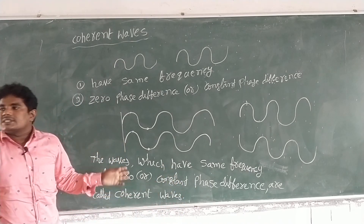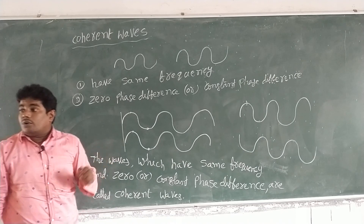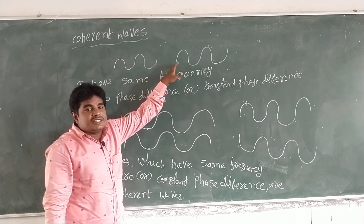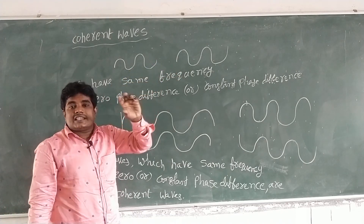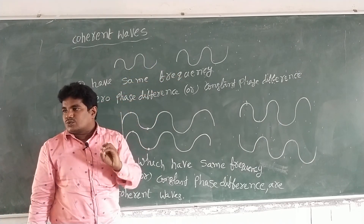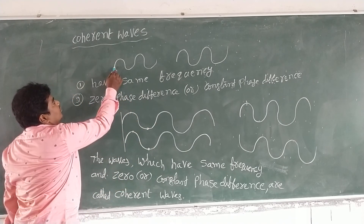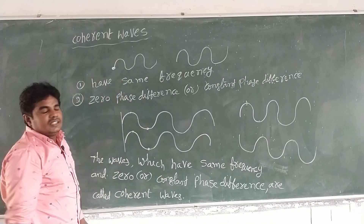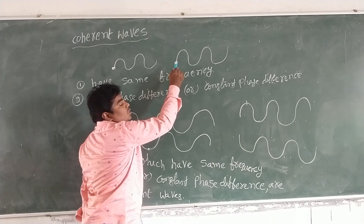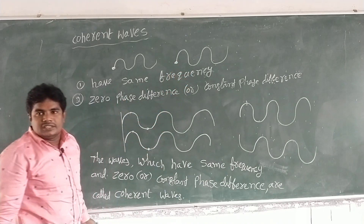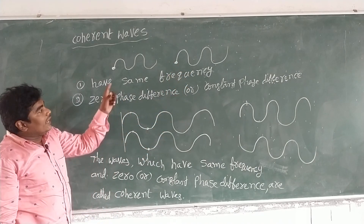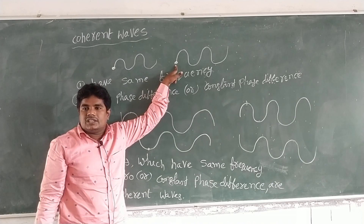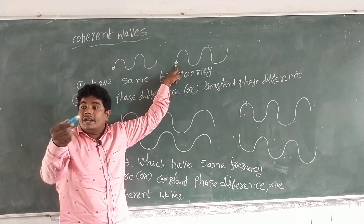So this is about coherent waves. If we generate sources of two waves, we can generate coherent sources. It will generate coherent waves from coherent sources.